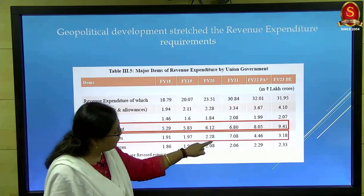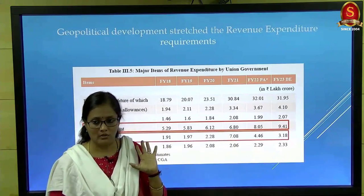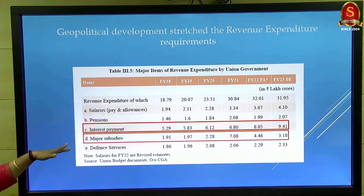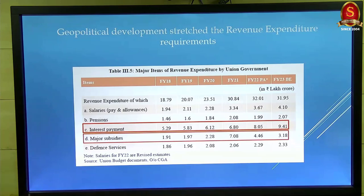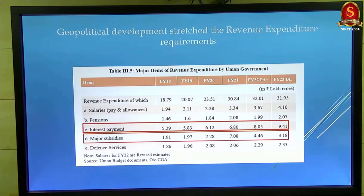Subsidies peaked in 2021 but are slowly declining now — these two patterns, interest payments versus subsidies, are distinct. Interest payment is now peaking because we borrowed heavily when fiscal deficit was at 9%; even though the deficit has come down to 6%, interest payments on past borrowings continue to rise. Subsidies, by contrast, can be increased or decreased by the government; they don't have subsequent effects on the accounts, unlike interest payments, which are linked between accounts.